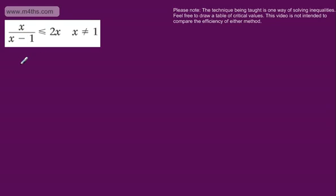We discussed in the last video that if we're multiplying by a factor, it needs to be a positive factor. And the way that we can ensure it's positive is to square it. So what I'm going to do is multiply through by the denominator squared.